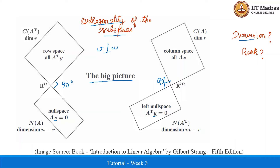The dimension of the column space is the number of linearly independent columns in matrix A, and the dimension of the row space is the number of independent row vectors in A. These dimensions are equal and are given by the rank of matrix A. The dimension of the null space is called nullity and equals n minus r, and similarly the dimension of the left null space is the number of rows minus the rank.